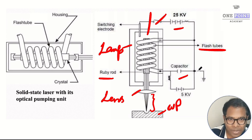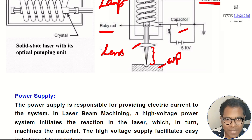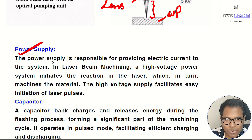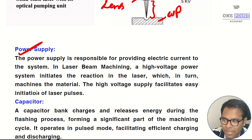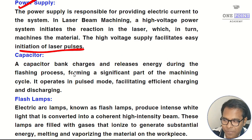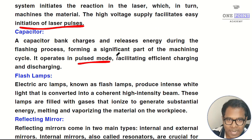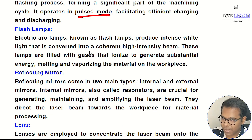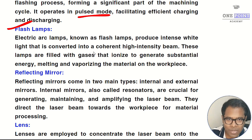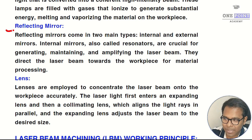Now let's see the individual functioning of all components. First, the power source is responsible for providing high-voltage power input to the complete system, charging and discharging the capacitor, which governs the initiation of laser pulses — making it the most critical component. Second, the capacitor stores and releases energy during charging and discharging phases, operating in a pulsed, programmed mode. Third, the flash lamps produce intense white light converted into a coherent high-intensity beam, and are filled with inert gases like xenon to prevent air molecules from interfering.